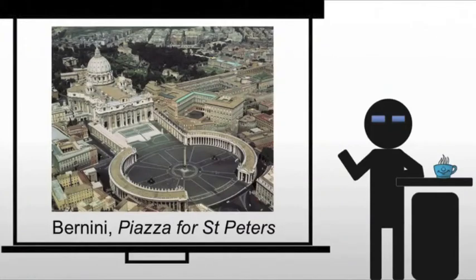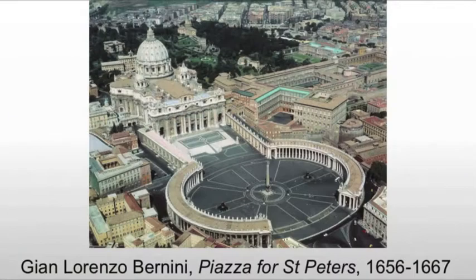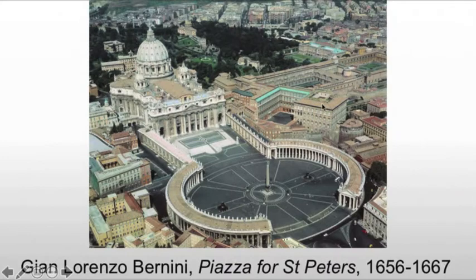Sticking with the theme of St. Peter's, let's look at Bernini's piazza for St. Peter's. This is the area in front of the church itself. To give you some orientation, here's St. Peter's, the Sistine Chapel is back here, and these are the papal apartments. So you have an idea of what we're actually looking at, and we're focusing on this piazza in the front.